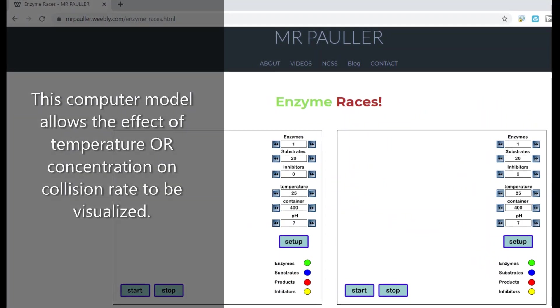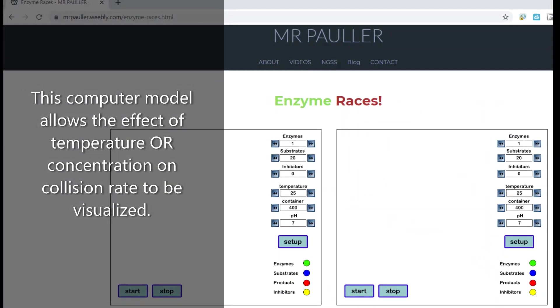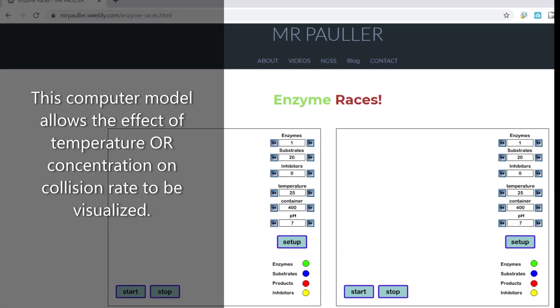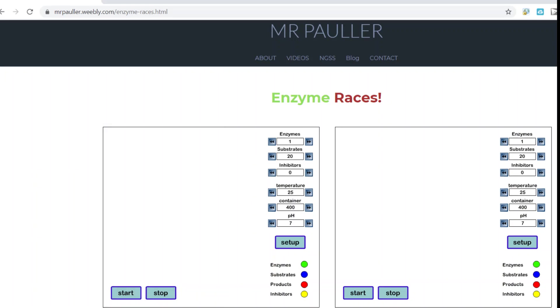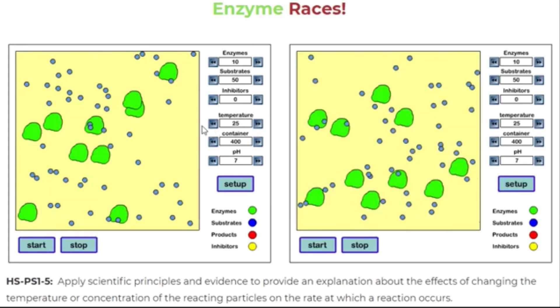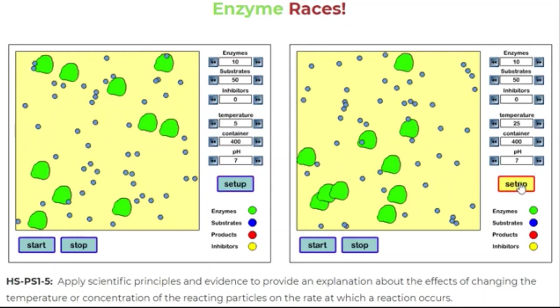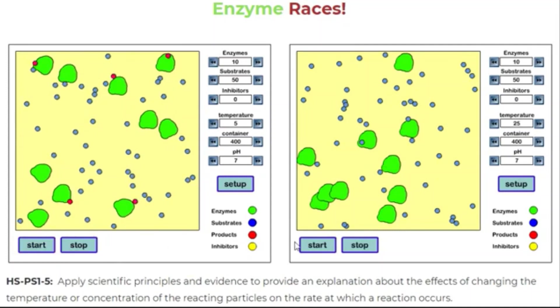Let's take a look at a computer model to help us understand what is happening at the molecular or particle level of a chemical reaction. I'll add a link in the description of the video to my website where you can run the simulation if you want to try it. In the first example we see that the number of green enzymes and blue substrates has been set to equal amounts in the left and right reaction windows. Substrates are also called reactants or starting materials. The temperature has been set to 5 in the left window and 25 in the right window.